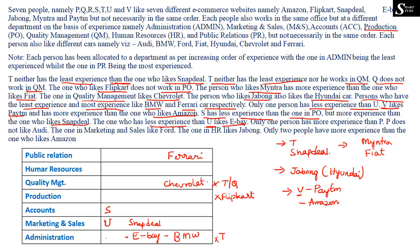Only one person has more experience than P, so P is placed in HR (the second-highest experience level). P does not like Audi. Also, the person in Marketing and Sales likes Ford, so Ford is substituted into Marketing and Sales.